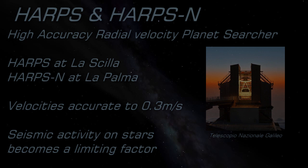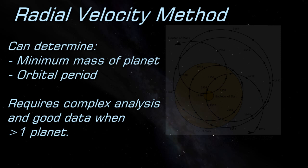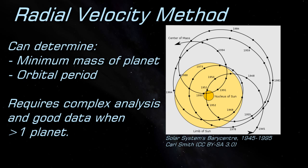The motion of a star isn't straightforward when there is more than one planet in its system, just as the sun's orbit around the solar system's barycenter isn't straightforward. In these cases, complex statistical analysis can, with good data, reveal details of additional planets orbiting the star.